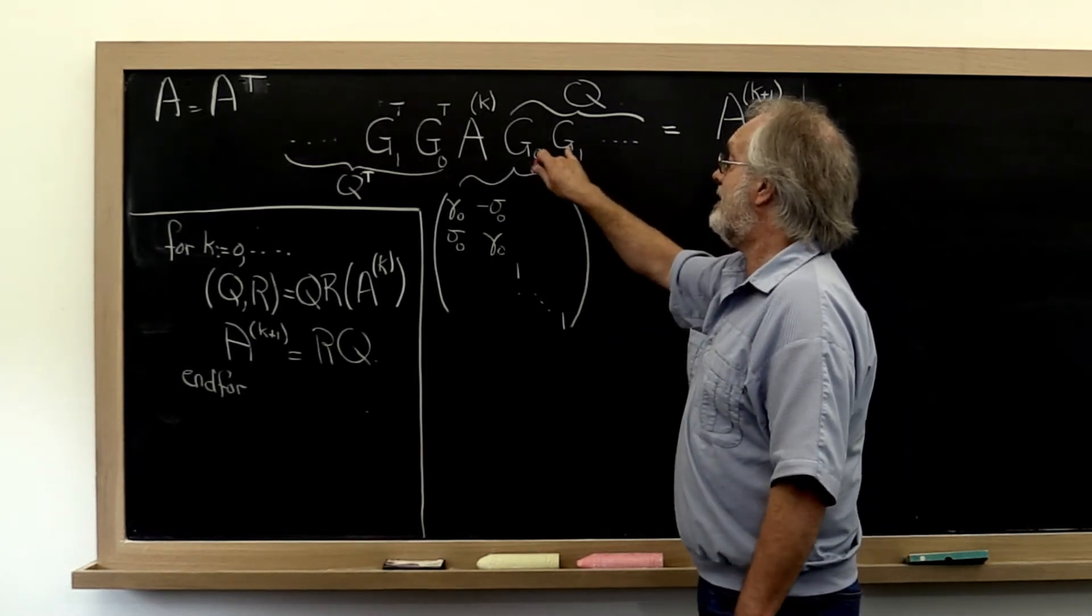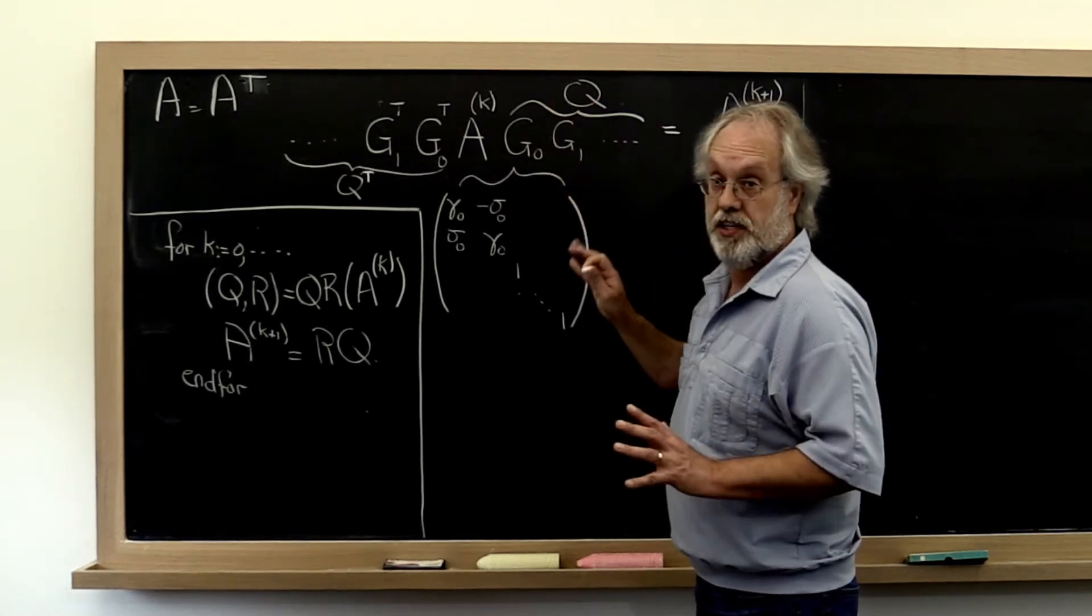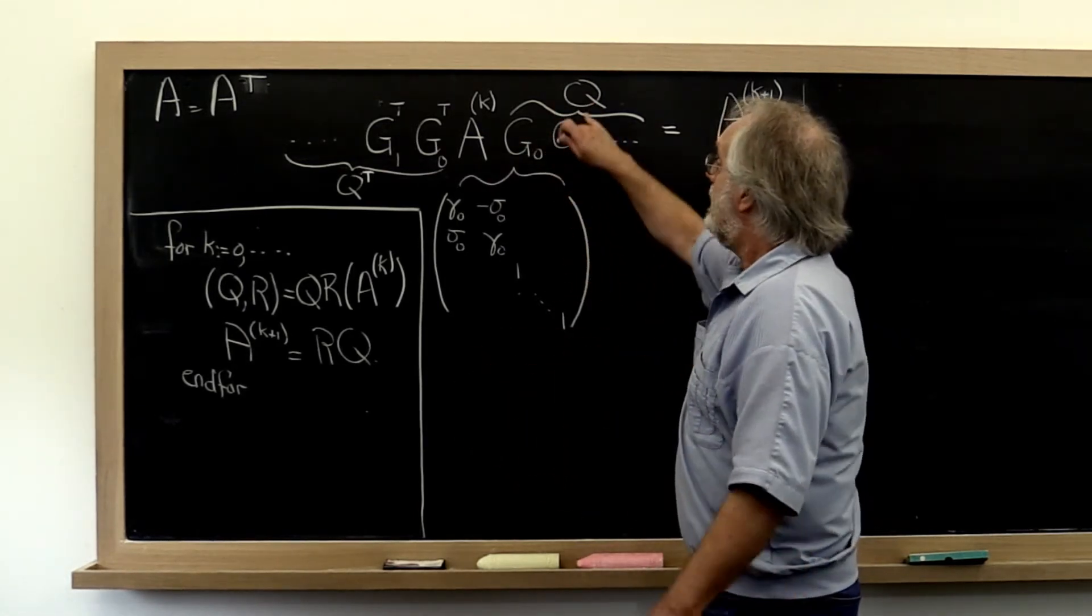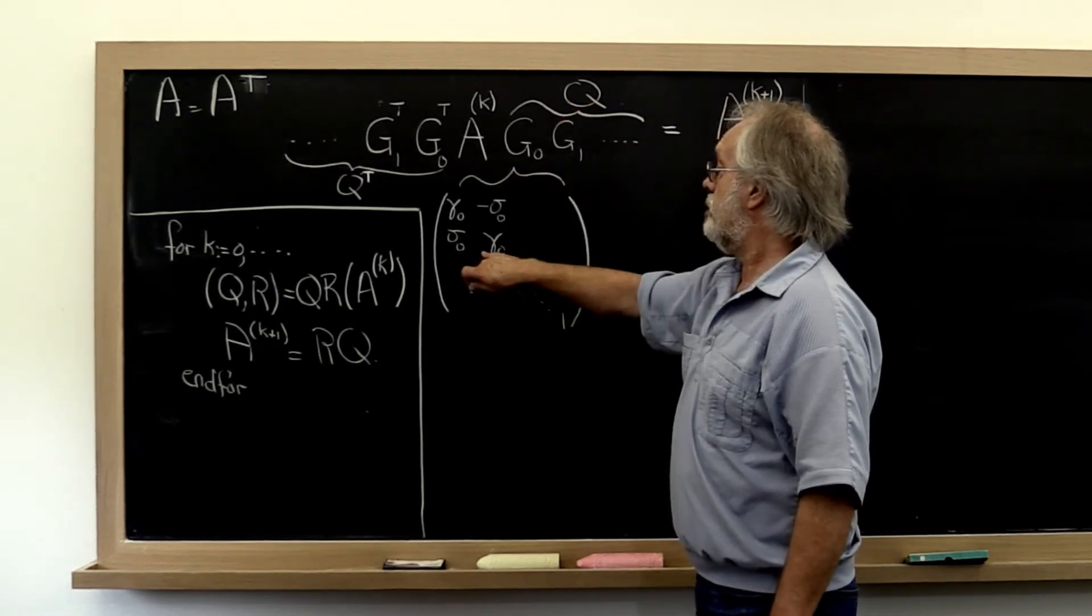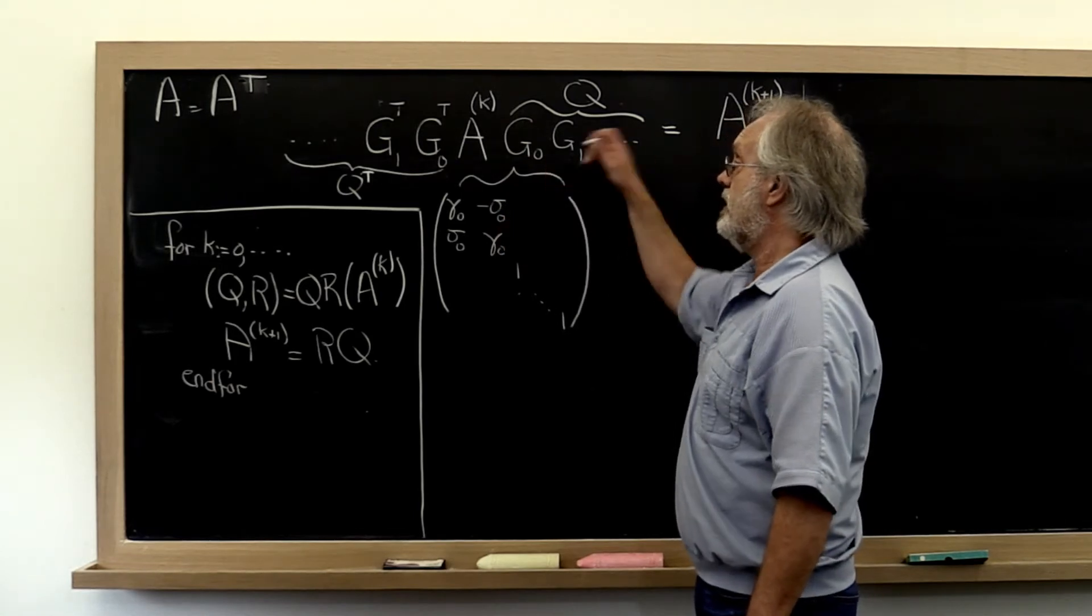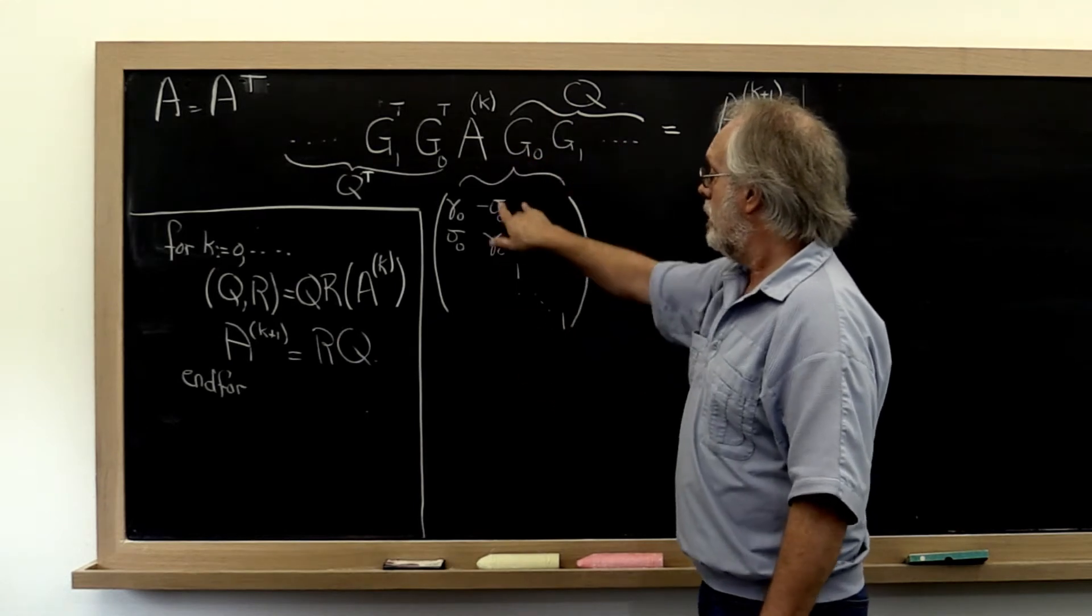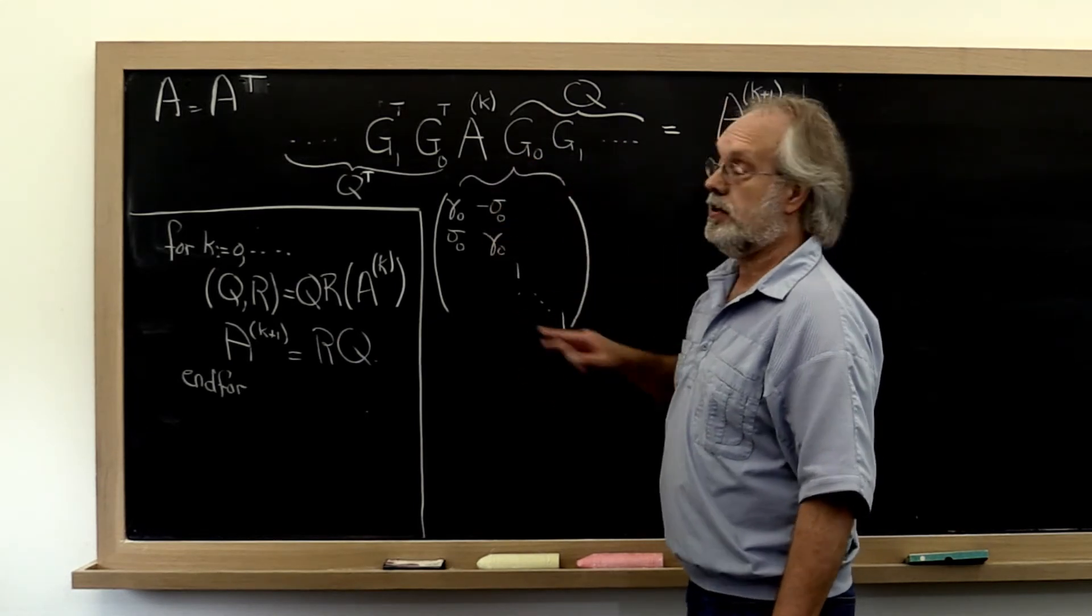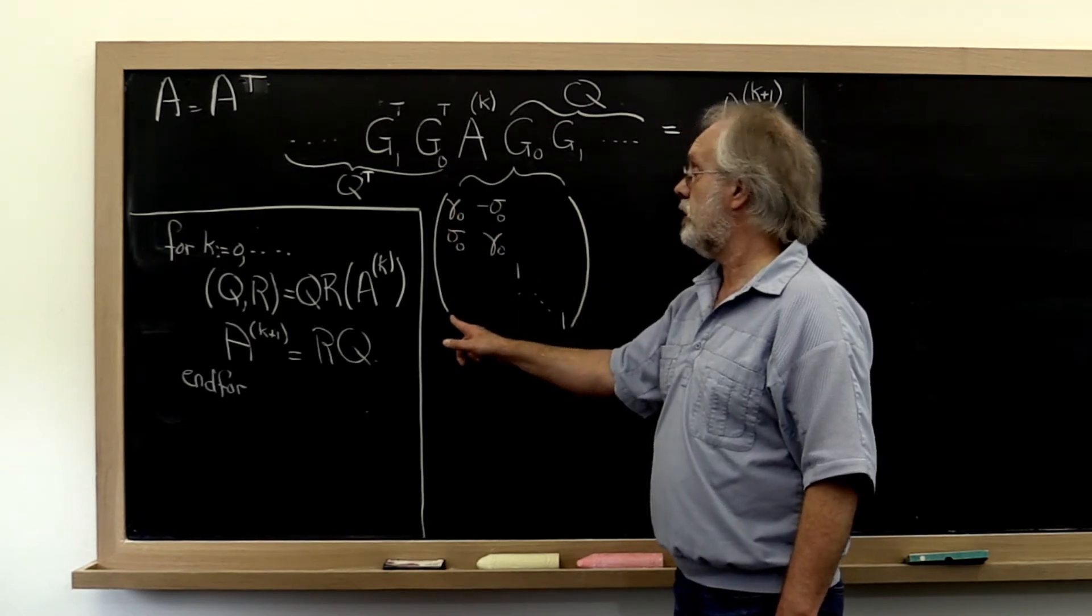What happens if we hit that matrix in order to compute our Q, which we're never going to do explicitly. But what if we actually tried to form Q, then we would have to take our matrix G_0 and hit it from the right with the next Givens rotation. But remember, that Givens rotation when applied from the right only affects the second and third column. Importantly, it leaves the first column alone.